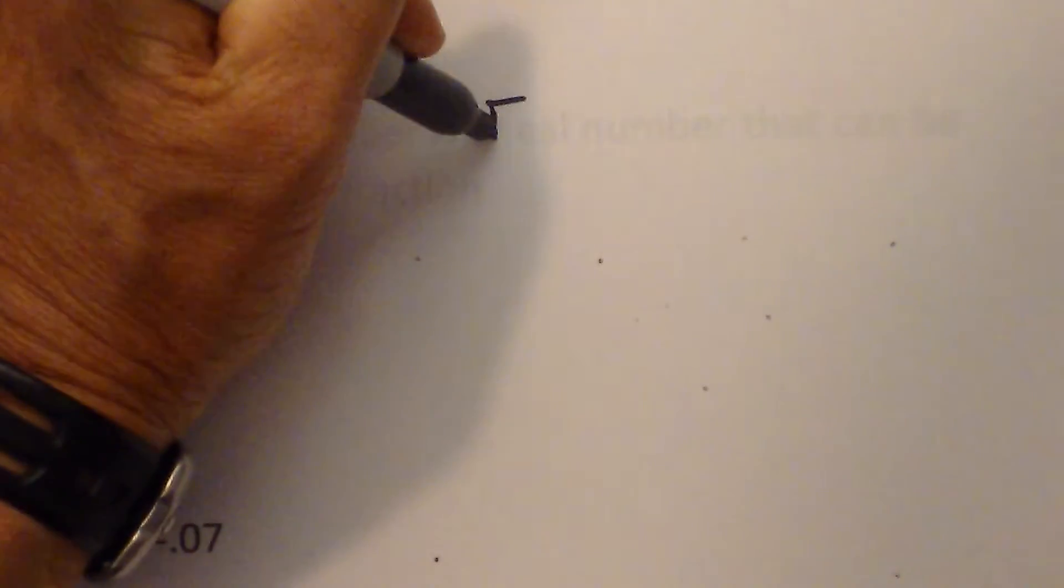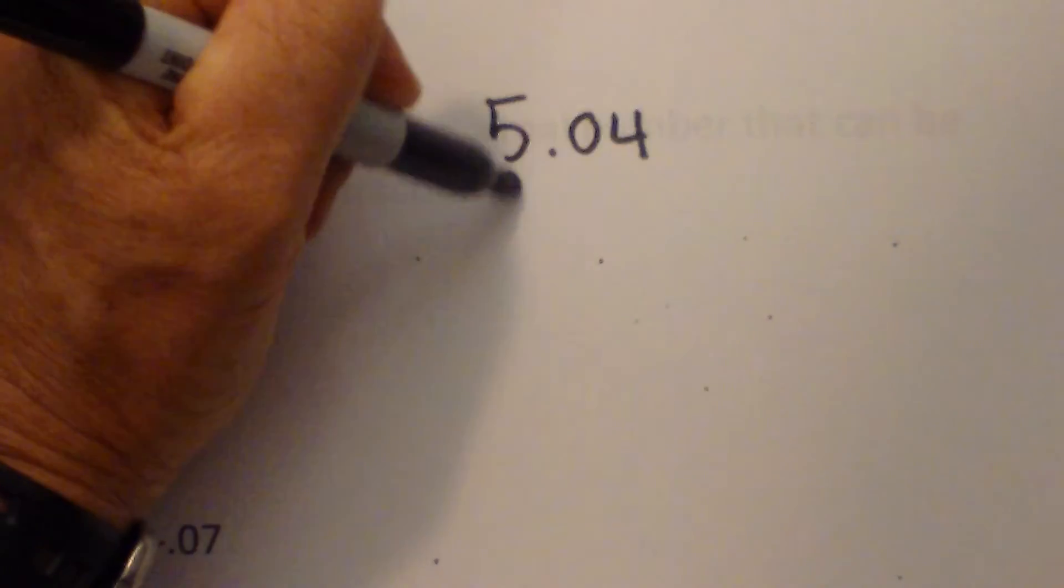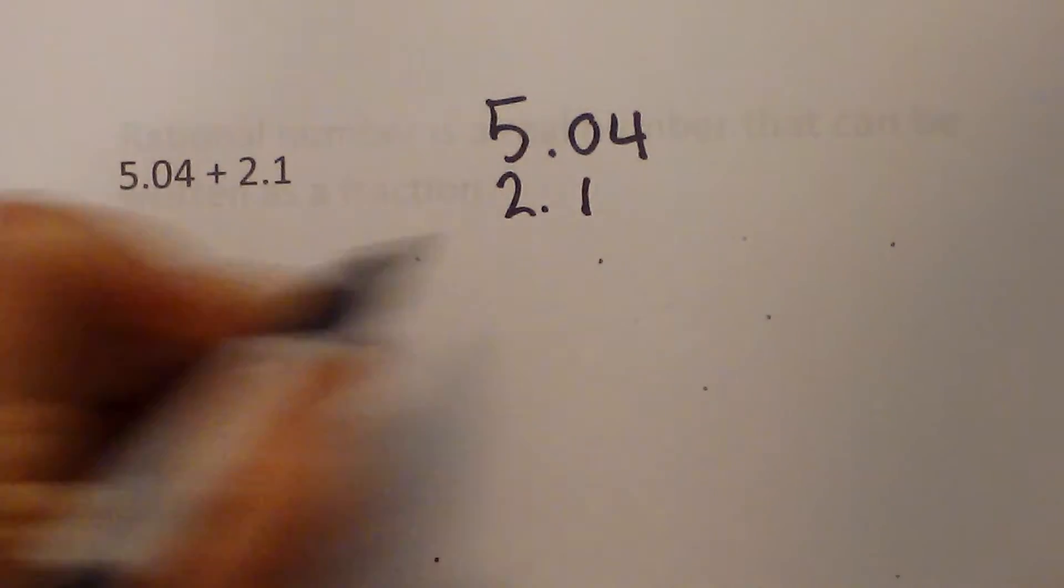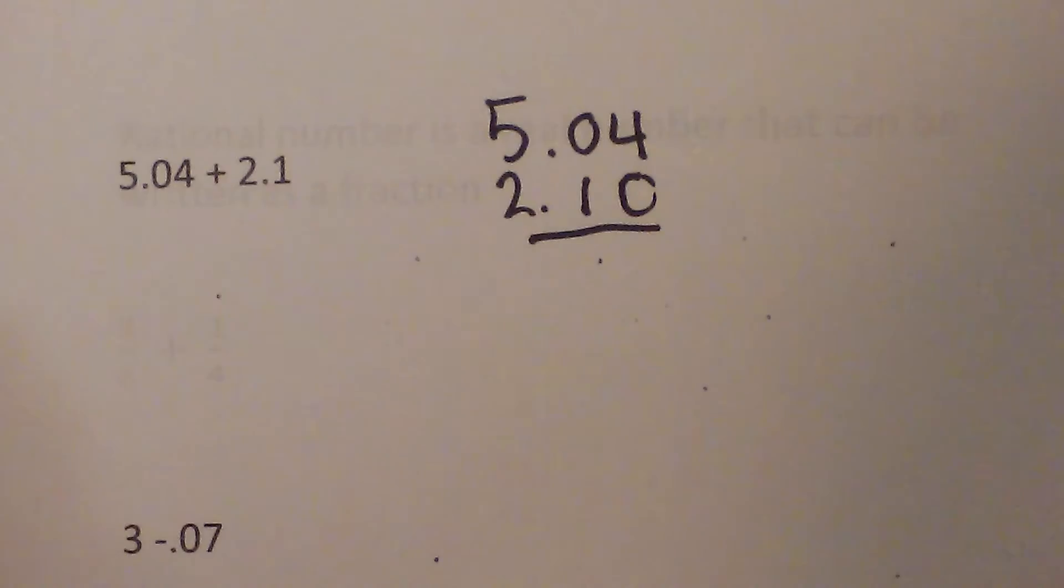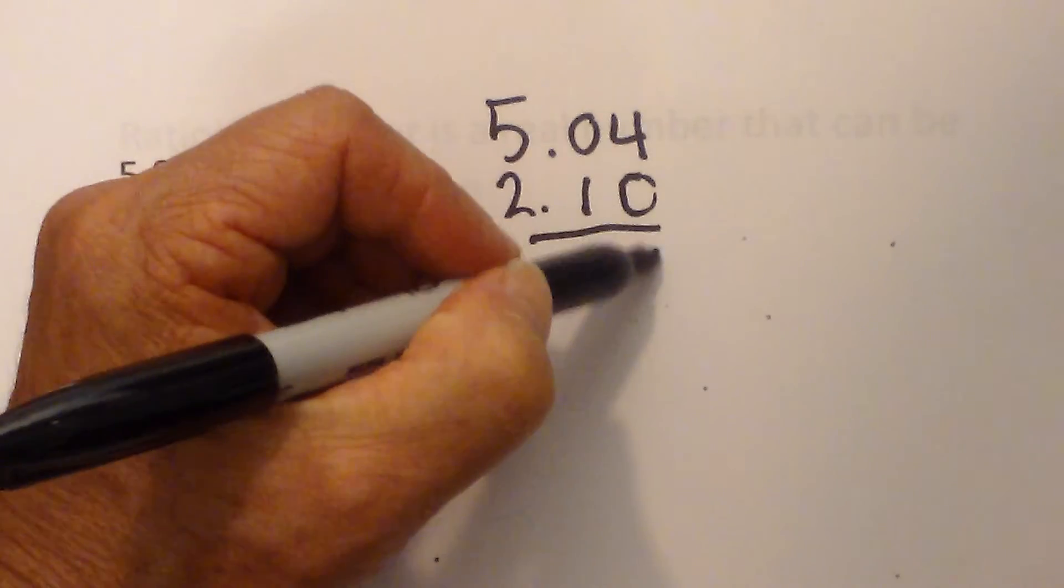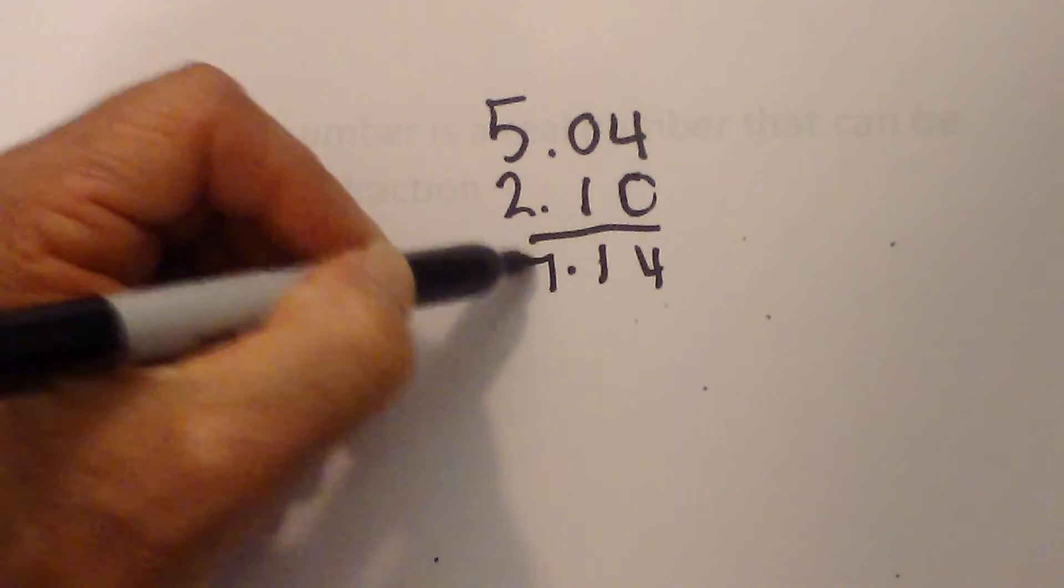And finally you sometimes get decimals. Decimals when you add decimals are easy, but it is also easy to make a mistake. So the most important thing is always line up the decimals. And so I have 5.04, 2.1. And if you don't like the way that looks, you can add zeros to make it look pretty. Bring down the 4, 1, and that is 7.14.